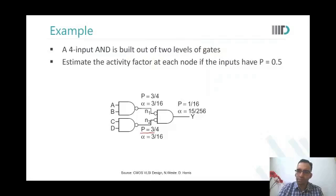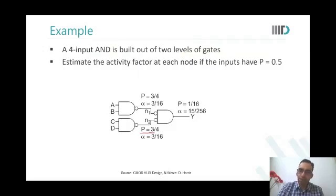So at Y, p is 1/16 and p-bar is 15/16, giving p times p-bar as 15/256.